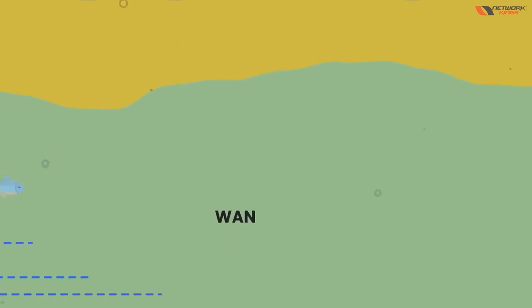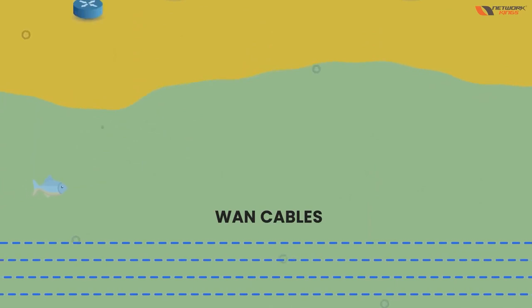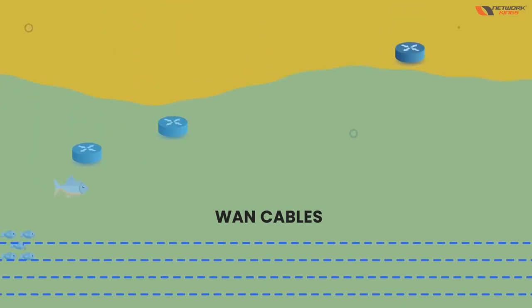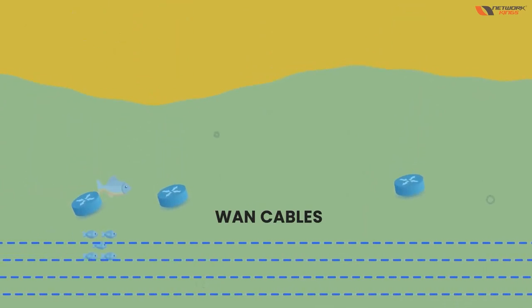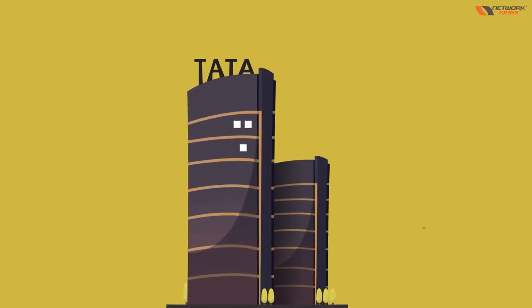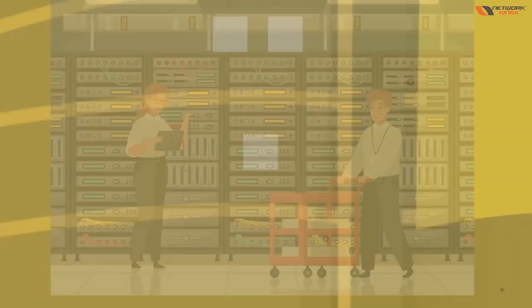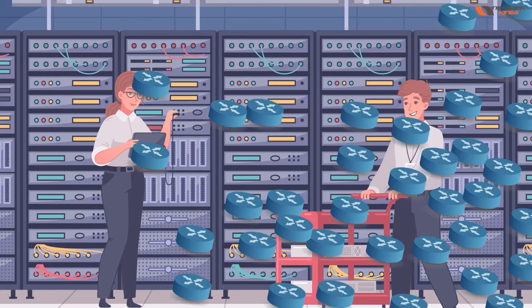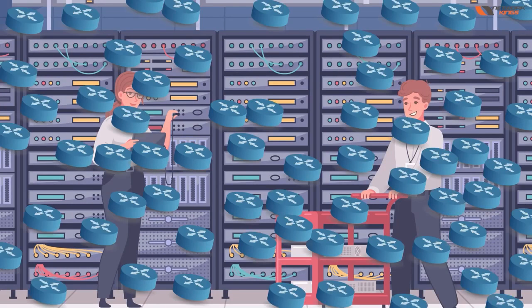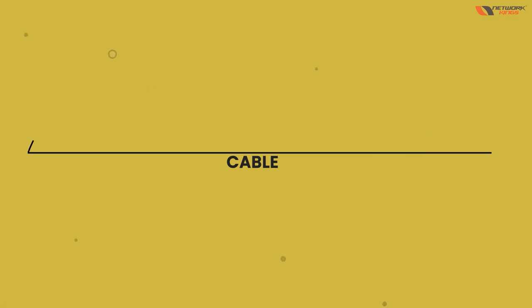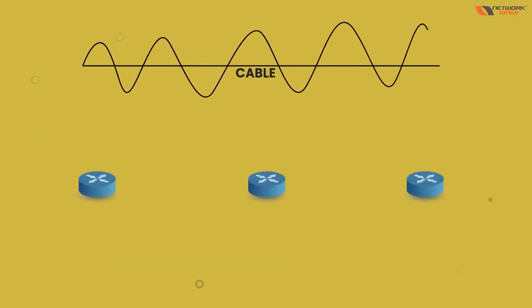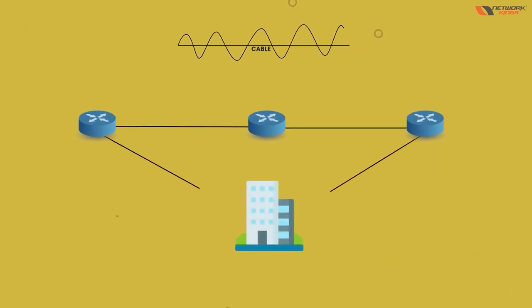Some WAN cables are undersea. Big ISPs have a lot of routers and a lot of cables, and they connect routers with cables. These cables provide connections to homes, offices, and everywhere.